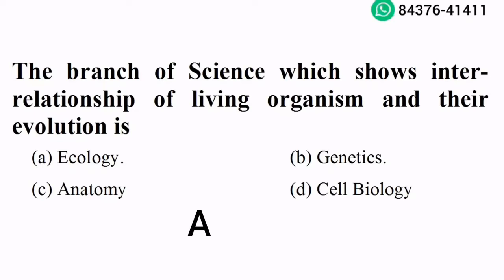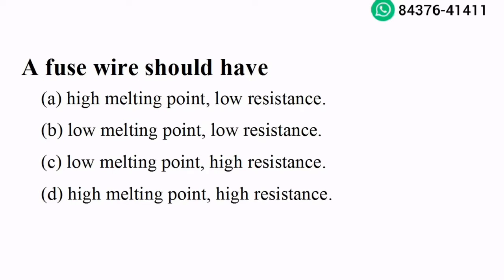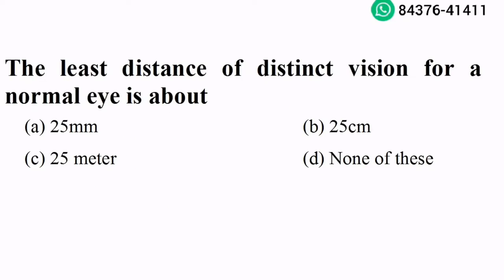Option A is the right answer. A fuse wire should have a low melting point and high resistance. Option C is the right answer. The least distance of distinct vision for a normal eye is about 25 cm. Option B is the right answer.